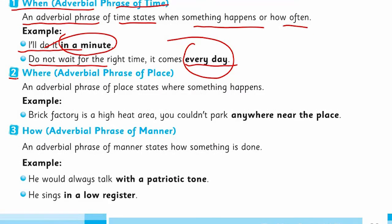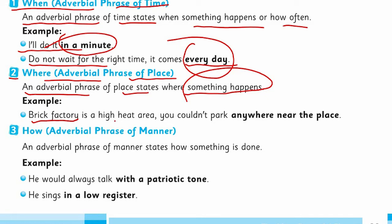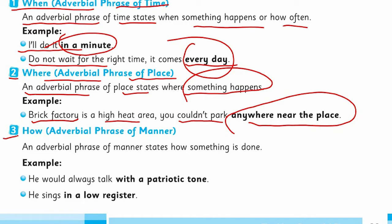Number two — where — adverbial phrase of place. An adverbial phrase of place states where something happened. For example: 'Brick factory is a high heat area, you couldn't park anywhere near the place.' 'Anywhere near the place' is your adverbial phrase of place.